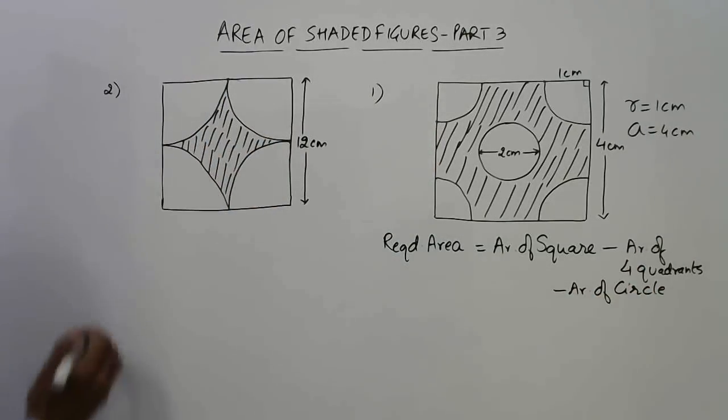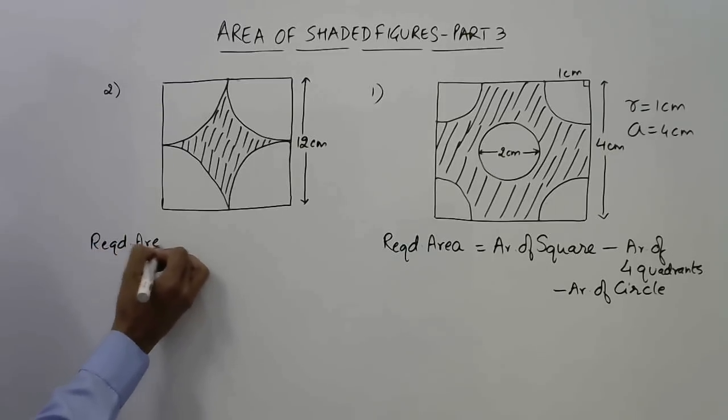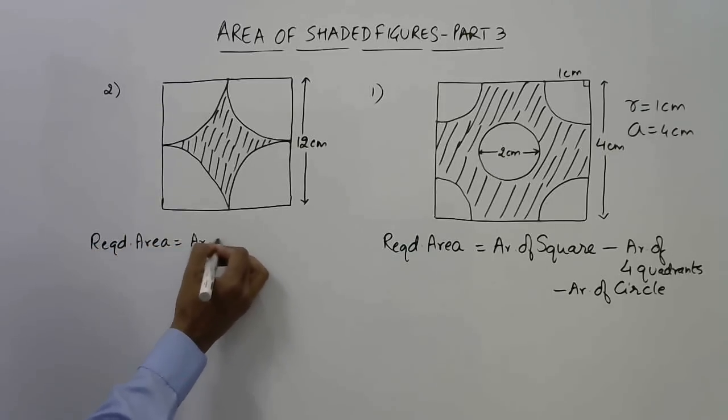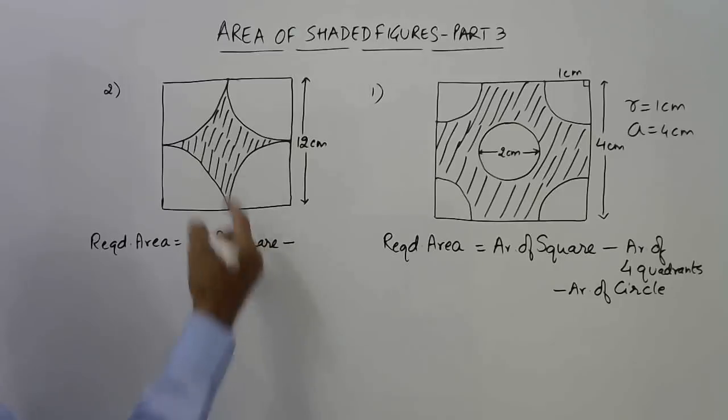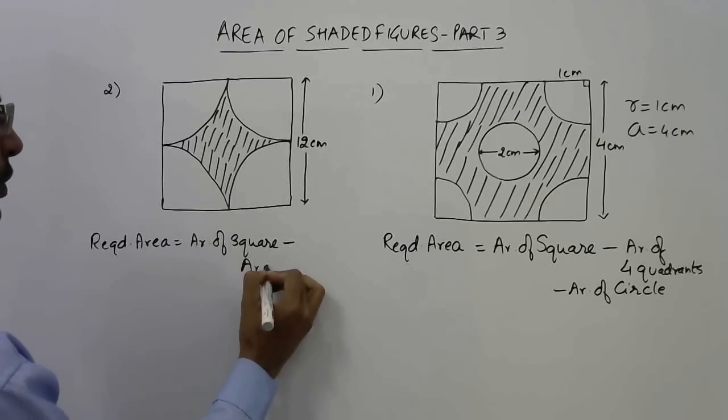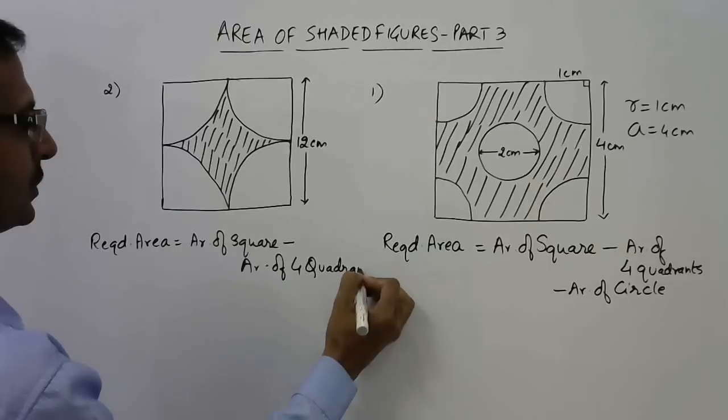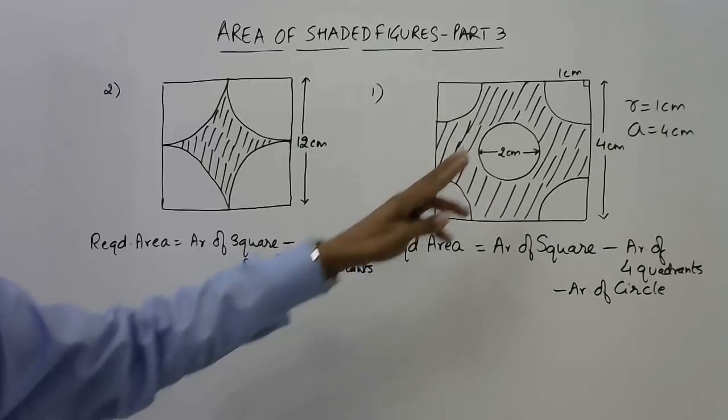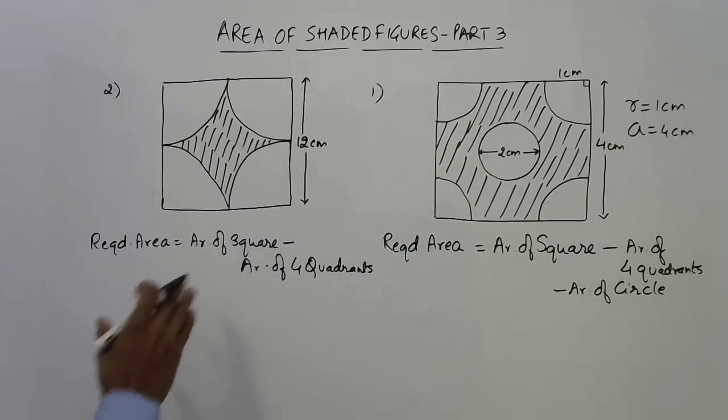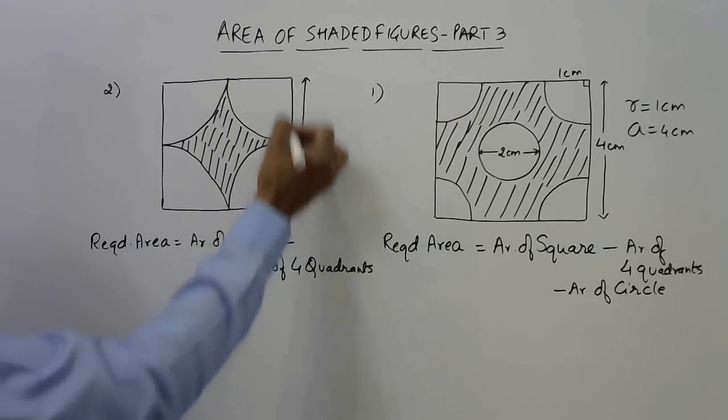Similarly in this figure, the required area is area of the square, the large figure, and you subtract the four quadrants. Area of four quadrants. The questions are similar in the sense that we have to subtract the area of four quadrants in both cases. Here we have a circle also, so we solve this first because this is easier.